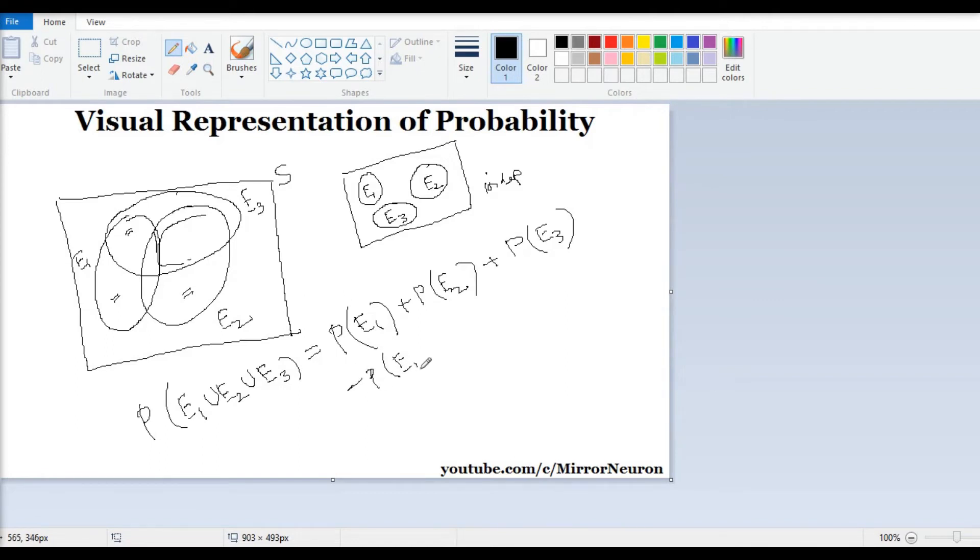So what I can do is I can say minus P(E1 intersection E2), minus probability of E1 intersection E3, minus probability of E2 intersection E3.